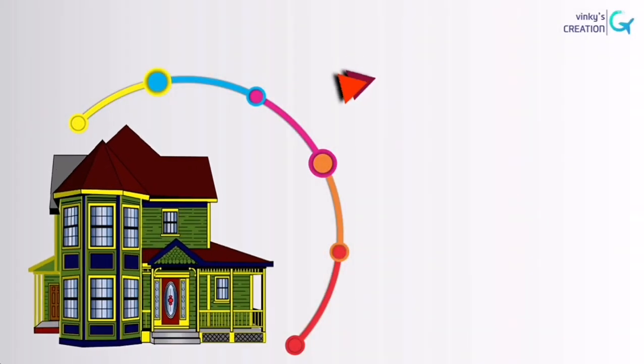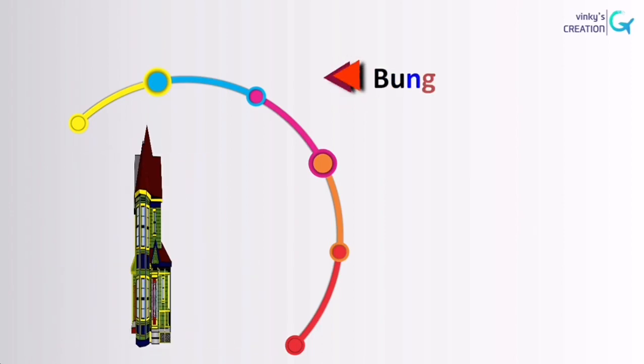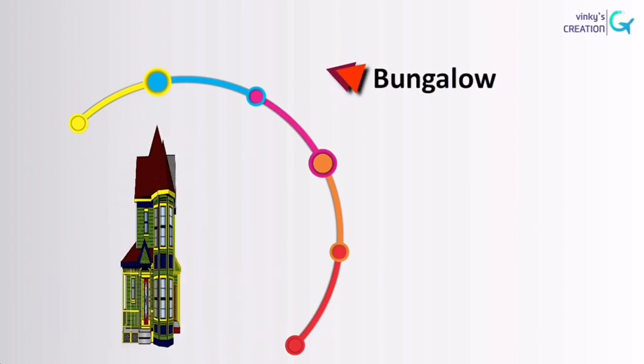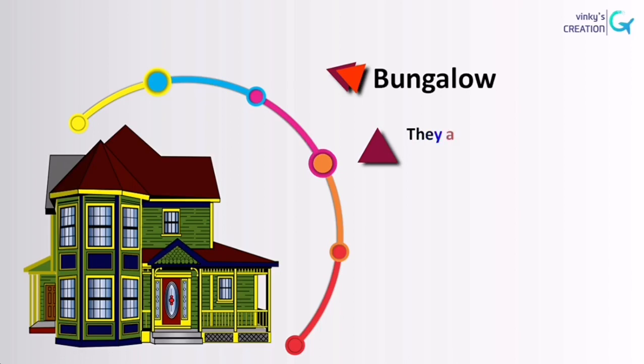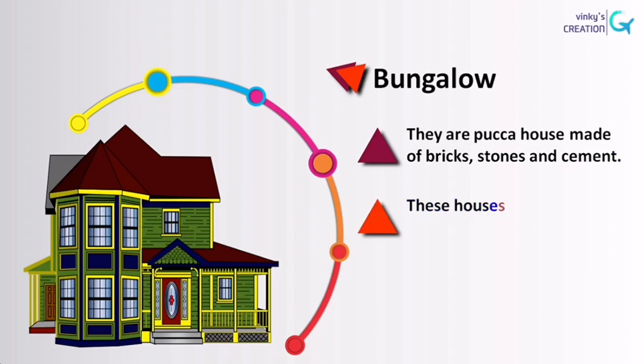Next is bungalow. They are paka houses made up of bricks, stones, and cement. These houses are generally found in cities and towns.